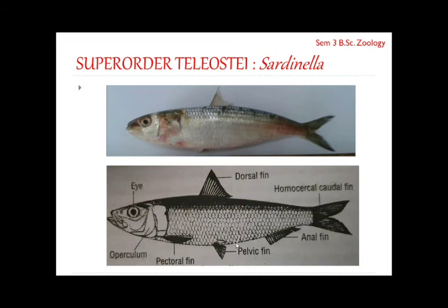Sardines are economically very important and form a major source of food for the common man. Their flesh is a rich source of protein, fat, phosphorus, calcium, iron, etc. They are extensively used for the extraction of oil and for the manufacture of various fish products like fish meal, fish flour, and fish cakes. Sardine oil is used in the jute industry, leather industry, and soap industry.